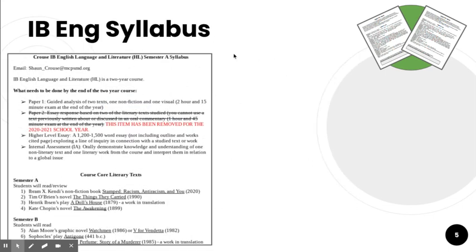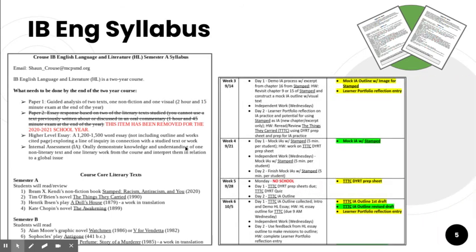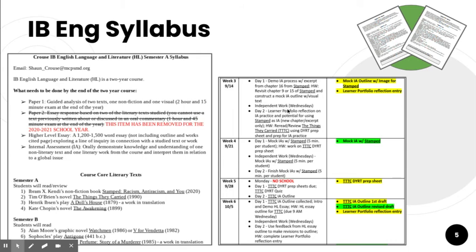The same thing is done for the IB syllabus. The major change to the program for this year is that we've eliminated the paper two exam at the end of the year. I've outlined what texts we'll be reading over the course of the year. And then same thing, week by week — what are the assignments we're working on on day one versus day two, and what assignments are graded and what category do they fall under.